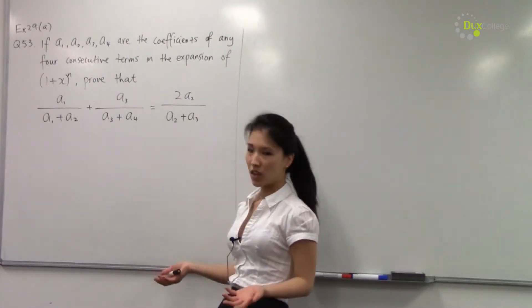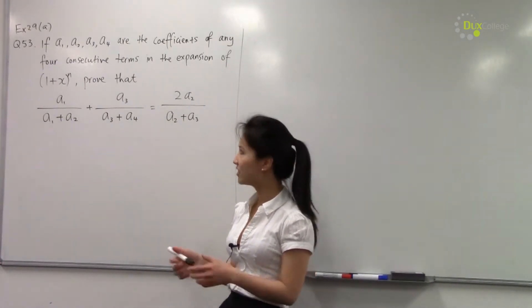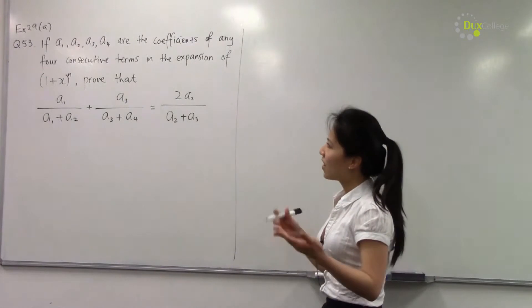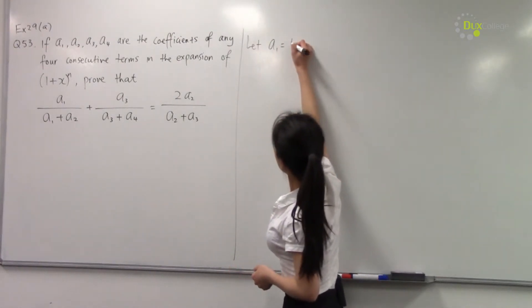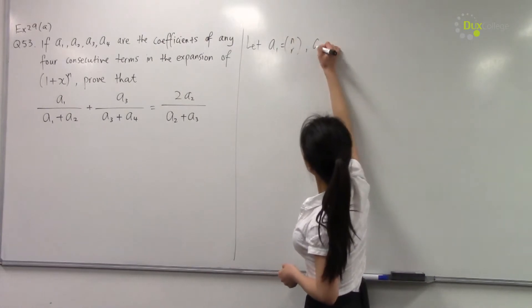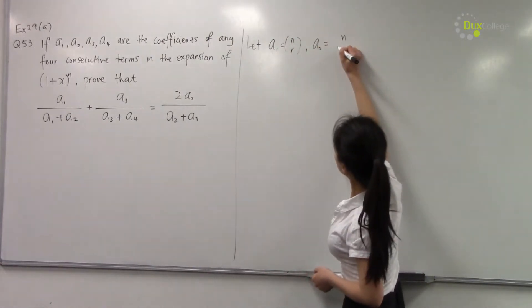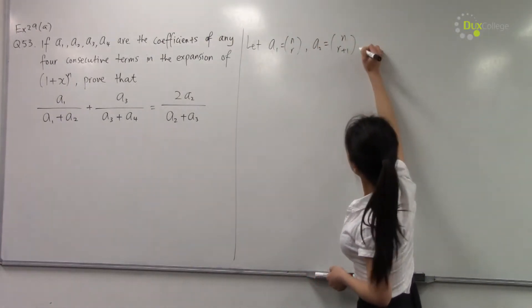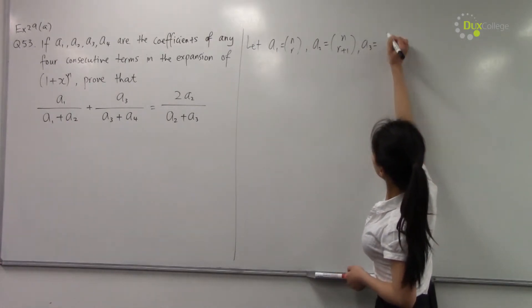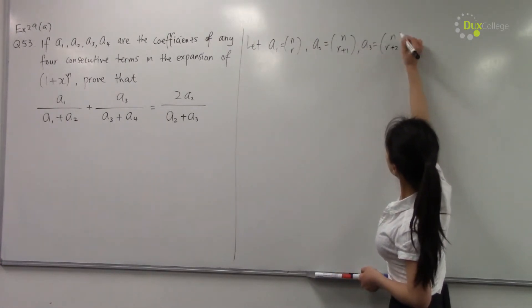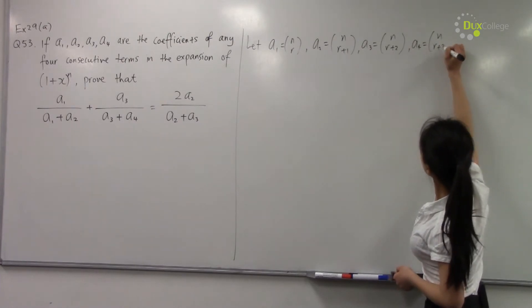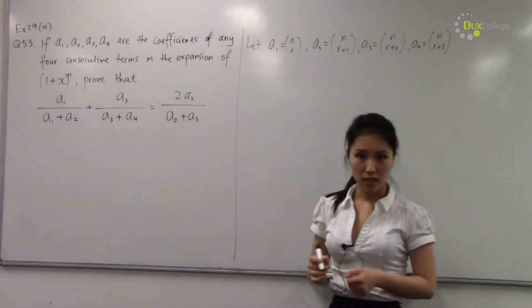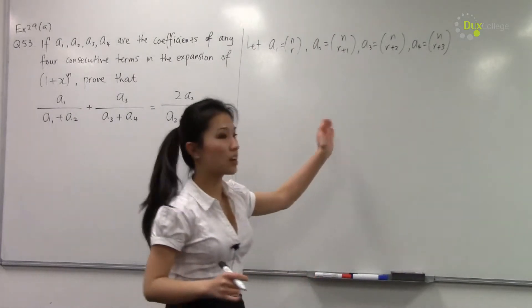Now as hard as it looks, it's actually not that hard. So what we can do is let a₁ equals n choose r, a₂ equals n choose r+1, a₃ equals n choose r+2, a₄ equals n choose r+3. And then let's work with this because these are consecutive coefficients.